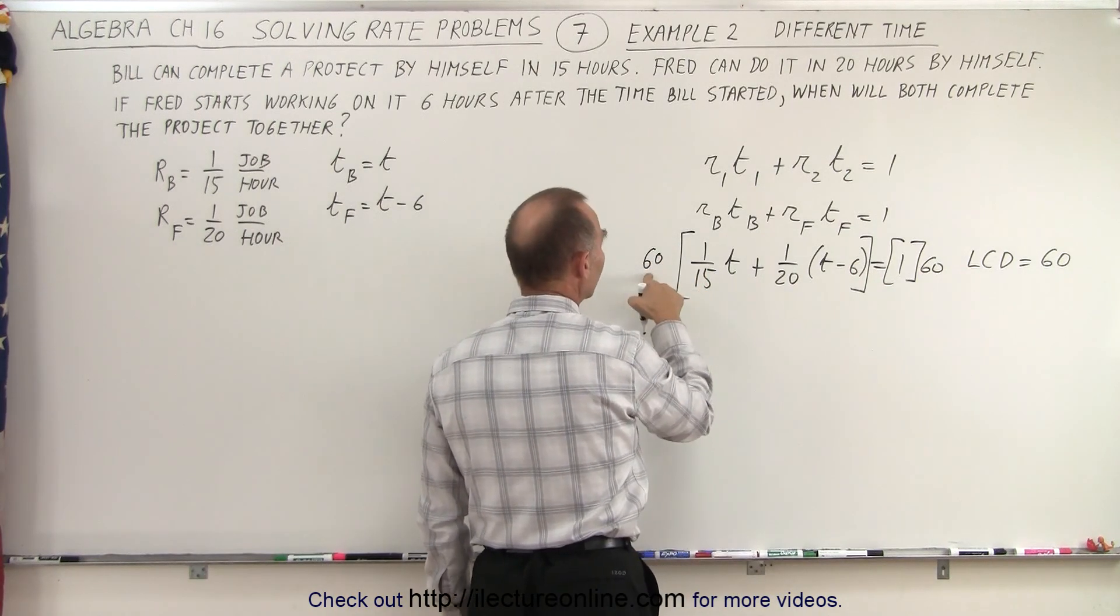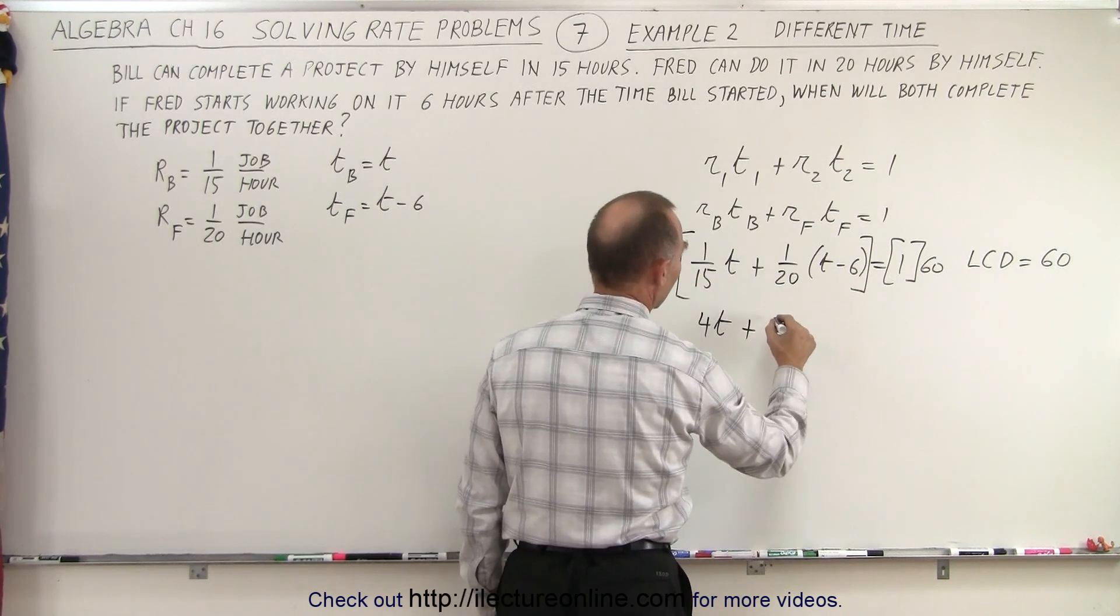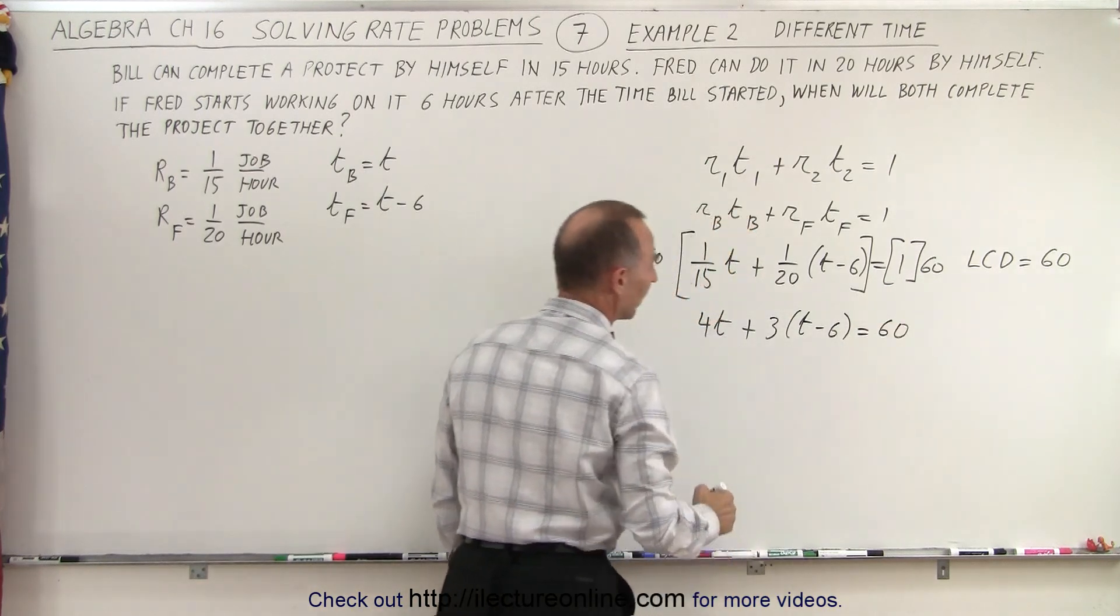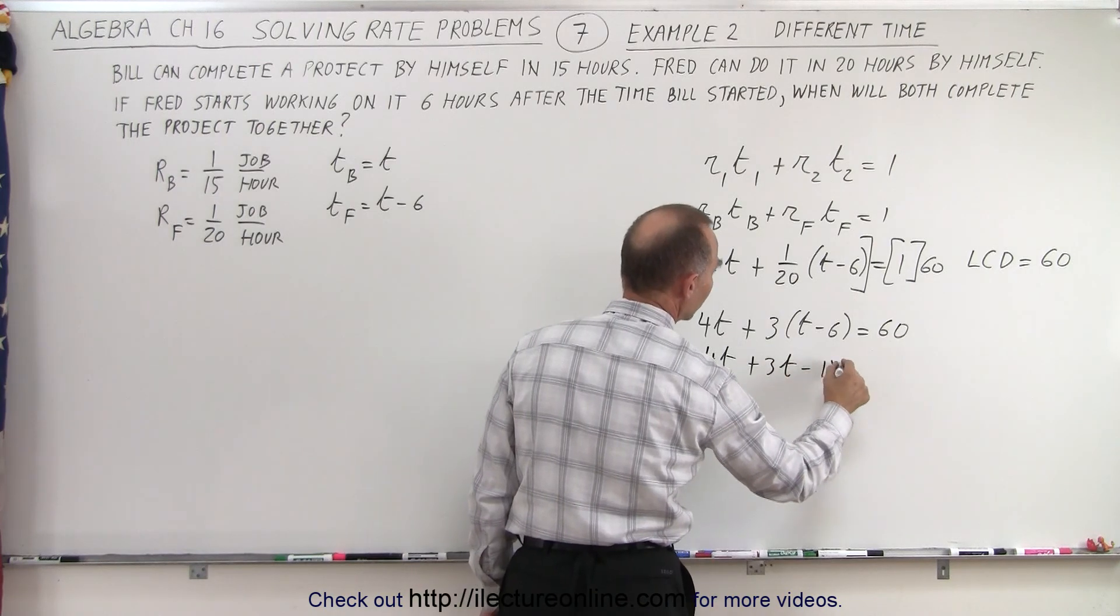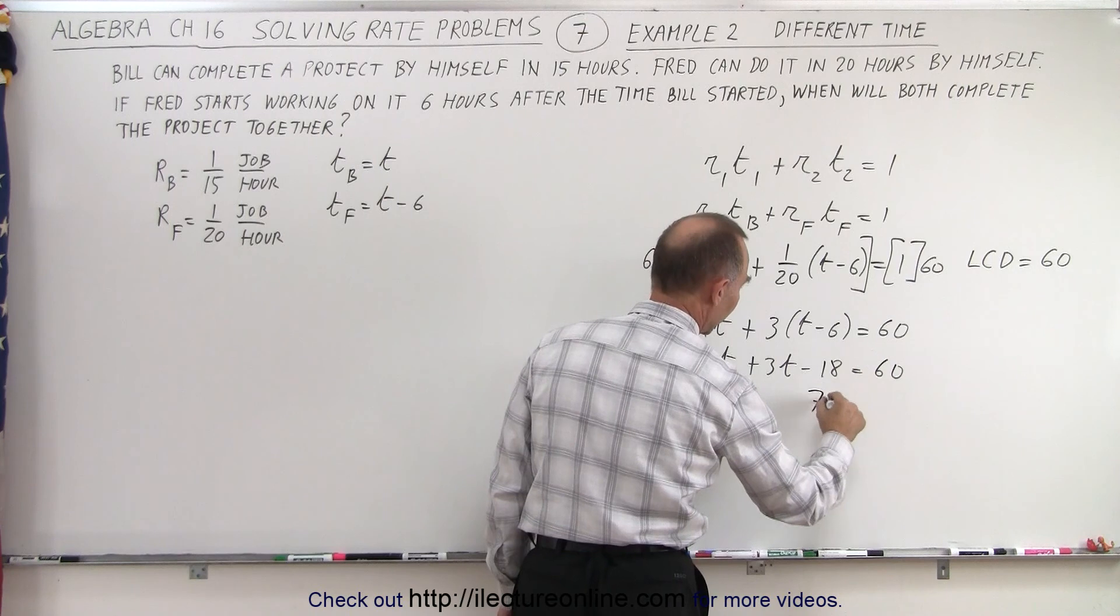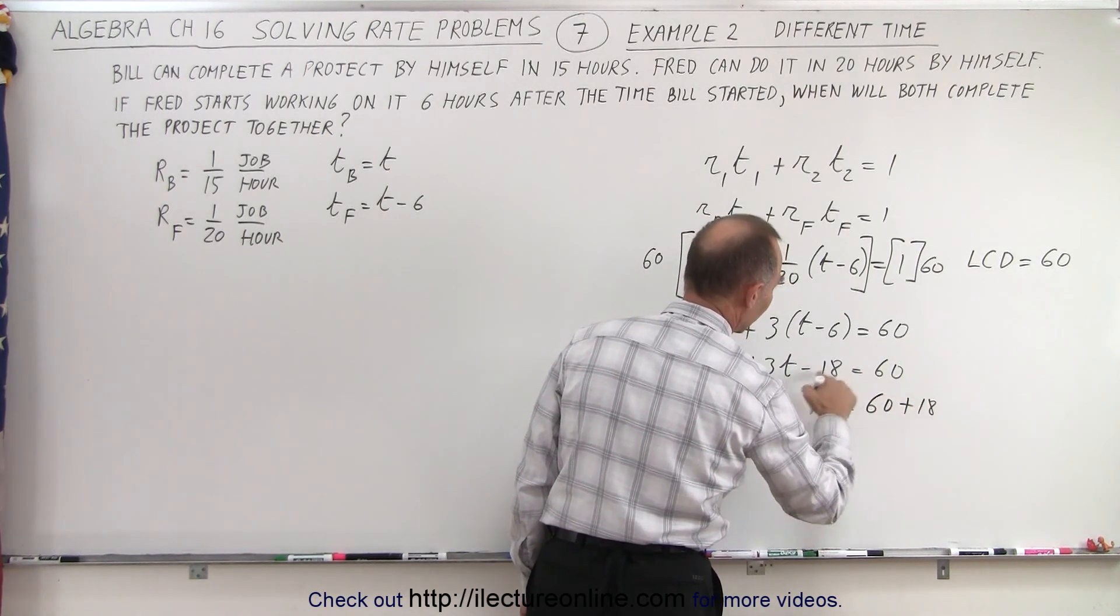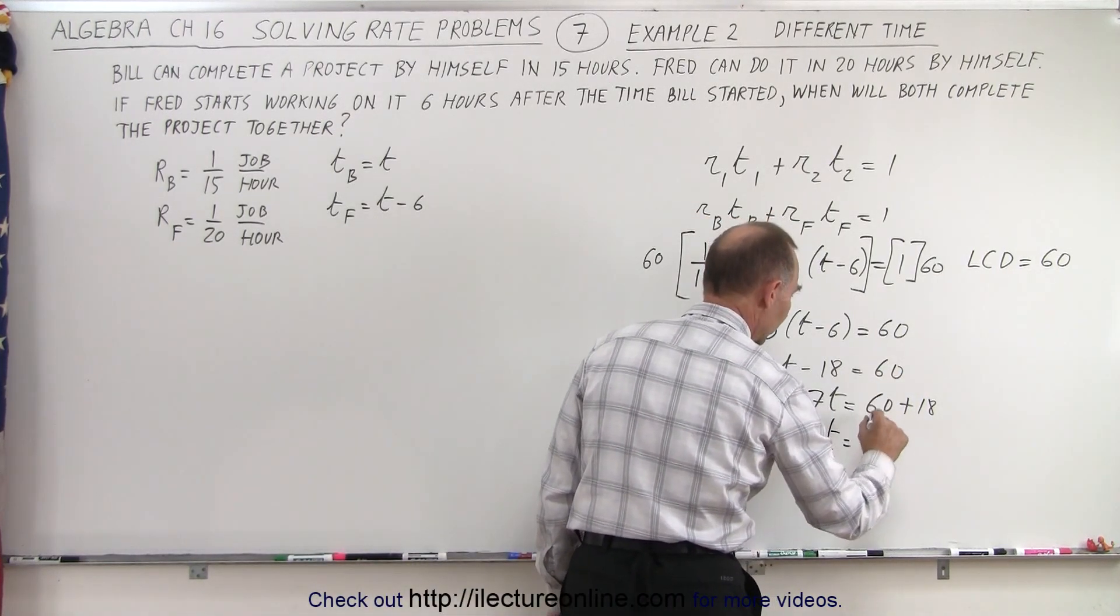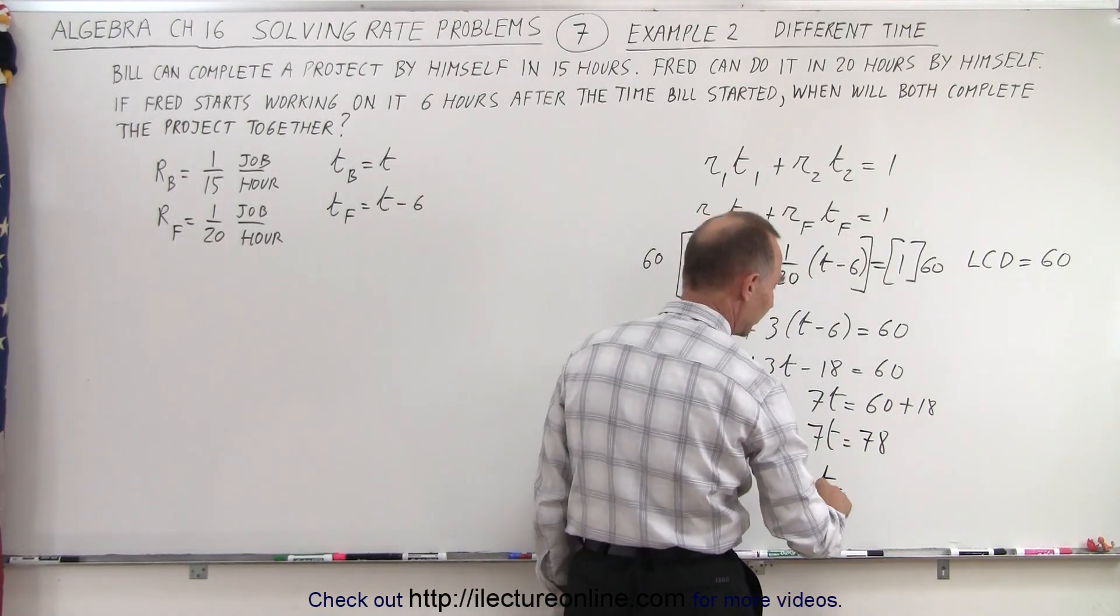15 goes into 60 four times so we get 4 times t plus 20 goes into 60 three times so we get 3 times t minus 6 is equal to 60 times 1. Getting rid of the parentheses we get 4t plus 3t minus 18 equals 60. We can collect common terms here which is 7t and move the 18 to the other side which is 60 plus 18 because the sign changes when we cross the equal sign.